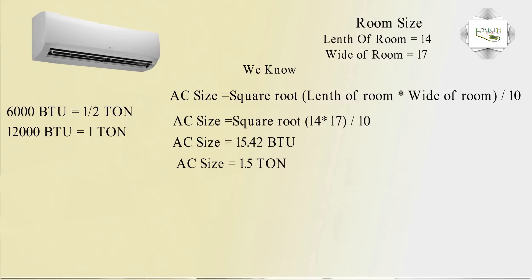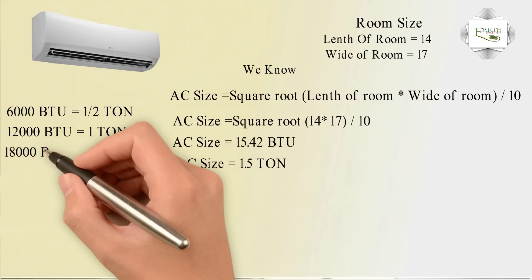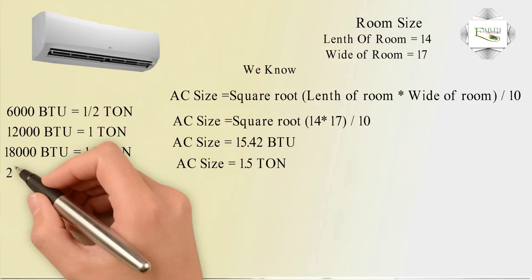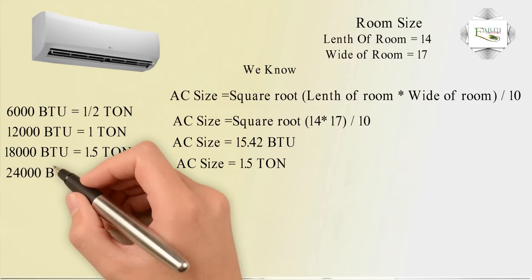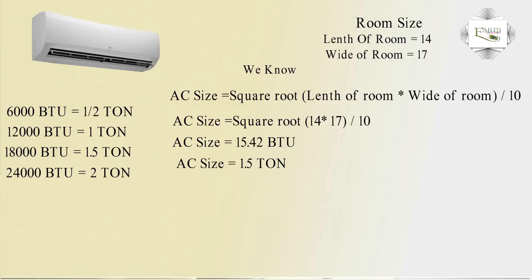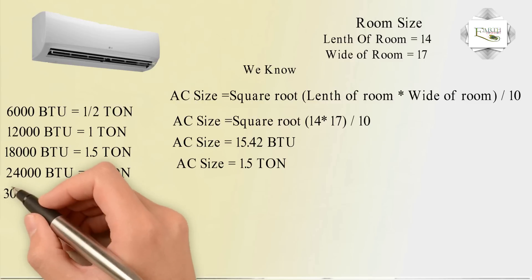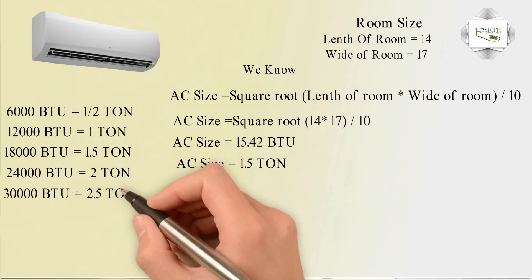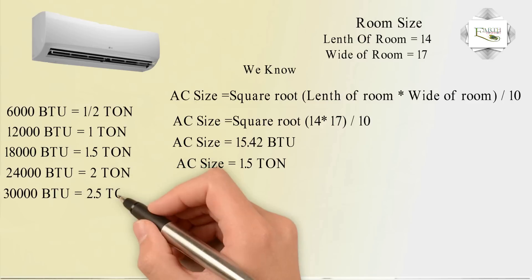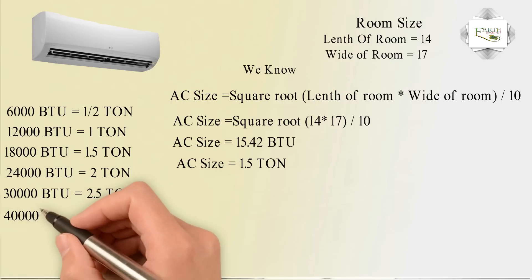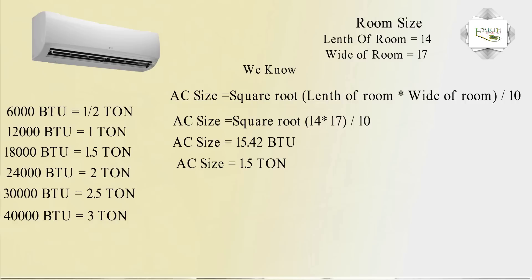18,000 BTU equals 1.5-ton AC. 24,000 BTU equals 2 ton AC. 36,000 BTU equals 3-ton AC. Full calculation of air condition size based on BTU rating.